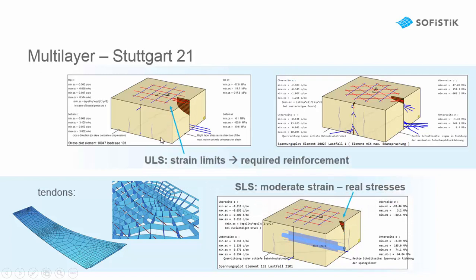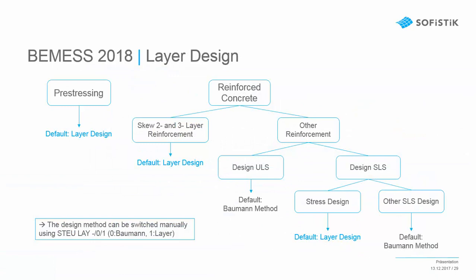Here we also see the big difference between an ultimate limit design where we reach the strain limits to get required reinforcement, and an SLS design where we have low strains and real stresses. As the iteration of the strains is very time consuming, it is not the default in our program for the ultimate limit state.